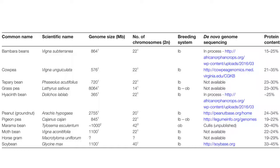Peanut (Arachis hypogaea) has 40 chromosome numbers and a genome size of around 2.7 Gb. Pigeon pea (Cajanus cajan) has 845 Mb genomic size and 22 chromosome numbers. Moth bean (Vigna aconitifolia) has 22 chromosome numbers and a genomic size of 1.1 Gb. Soybean (Glycine max) has 40 chromosomes and a 1.1 Gb genomic size.